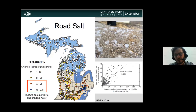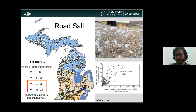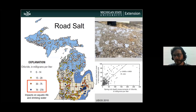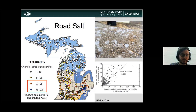Rounding out the non-point source pollution portion is road salt. This has gained a lot of steam because as we studied it, we started seeing some big implications. Road salt is predominantly sodium chloride, and we measure it as a pollutant by looking at chloride levels. Not surprisingly, we see higher chloride in our lakes — this map shows lakes studied for chloride — and higher concentrations of chloride in our urban areas where we use a lot of road salt.